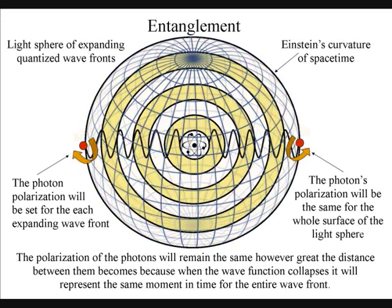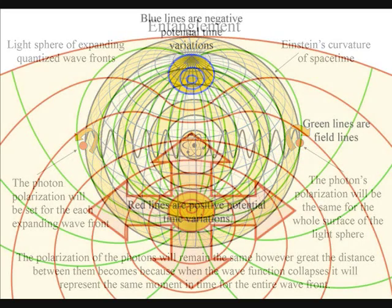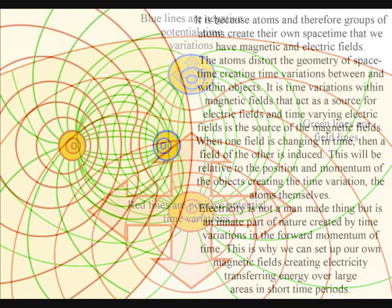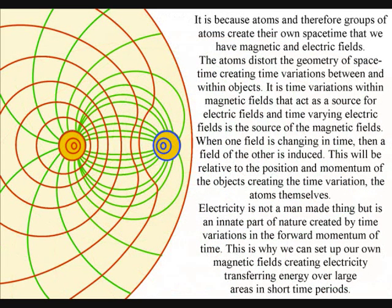In this theory, it is because the atoms can distort the geometry of space-time that we have electromagnetic fields. It is time variations within magnetic fields that act as a source for electric fields, and time-varying electric fields is the source of the magnetic fields.